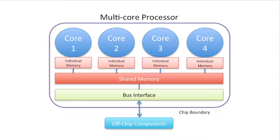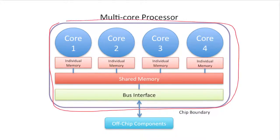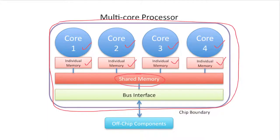Let's look at a very simplified design of a multi-core processor. This is the CPU boundary and we have four separate cores inside the processor, four separate CPUs, and each core has individual memory. There are also some shared memory because each core needs to communicate with each other in the processing of subprograms. And this is the bus interface.